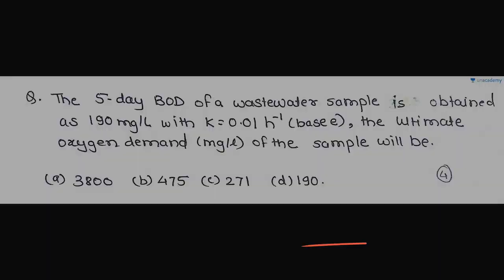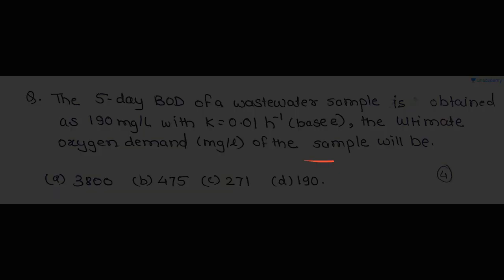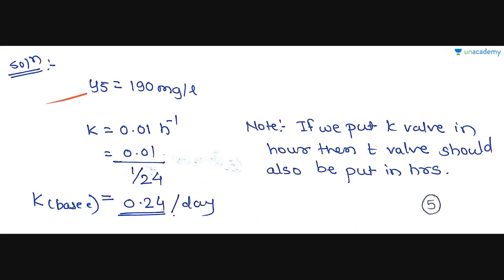The next question: the 5-day BOD of a wastewater sample is obtained as 190 mg per liter, with K = 0.01 per hour (base e). The ultimate oxygen demand in mg per liter of the sample will be: Option A: 3800, Option B: 475, Option C: 271, Option D: 190. Y₅ is given as 190 mg per liter. K is given in per hour, so we convert it to per day: 0.01 divided by (1/24), giving K (base e) = 0.24 per day.